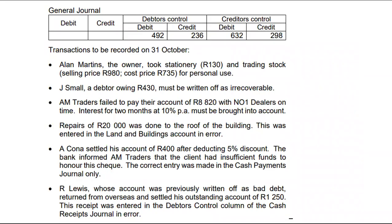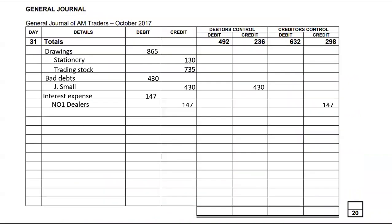Point four: Repairs of R20,000 were done to the roof of the building, but this was entered in the London Buildings account in error. We debited London Buildings in error, so we need to reverse that by debiting the correct account — Repairs — and crediting London Buildings with R20,000. This does not affect debtors control or creditors control.